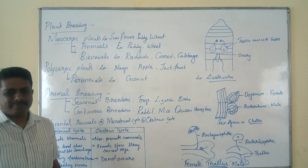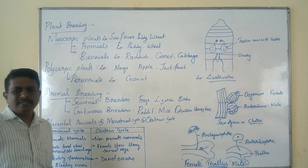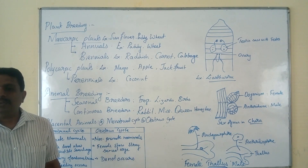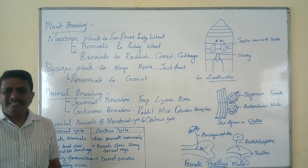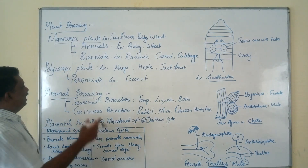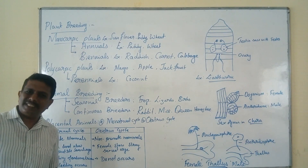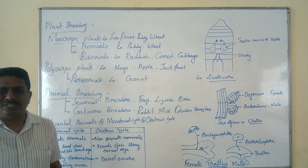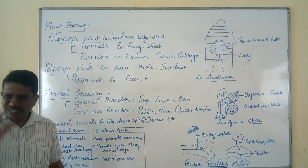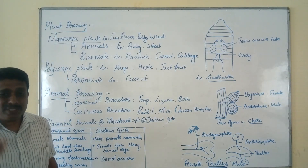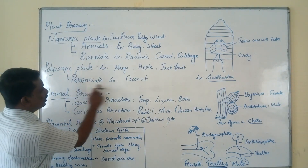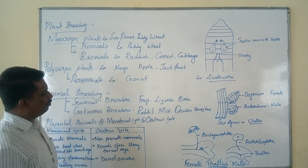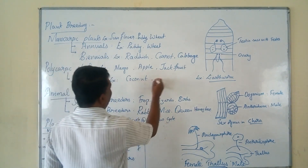Polycarpic plants are plants which produce flowers every year in a particular season. They are also designated as perennial plants. Perennial plants produce flowers throughout the year throughout their lifespan. Two classical examples of perennials are coconut and hibiscus.